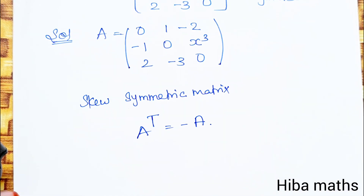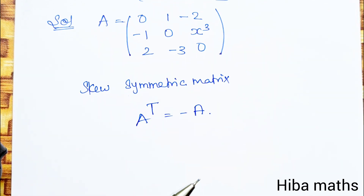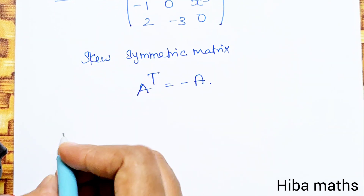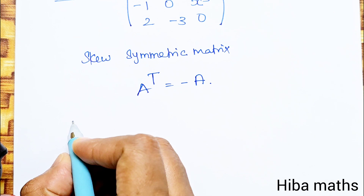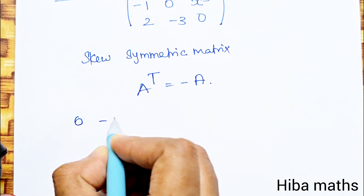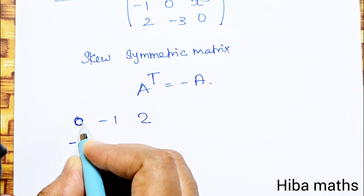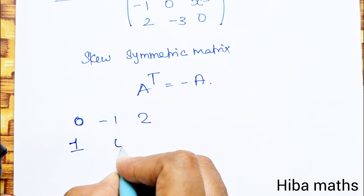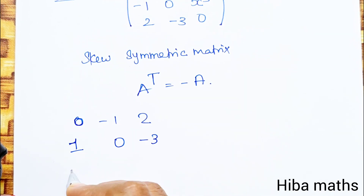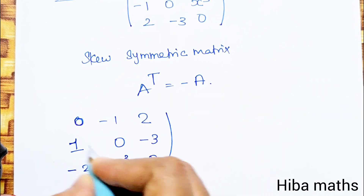A transpose — taking the transpose: 1st row becomes 1st column. So A transpose is [0, -1, 2; 1, 0, -3; -2, X³, 0].